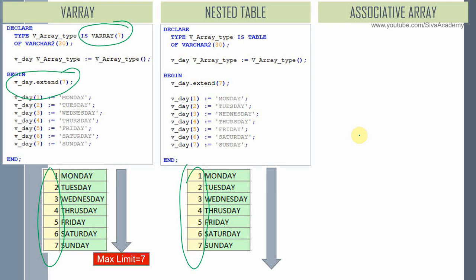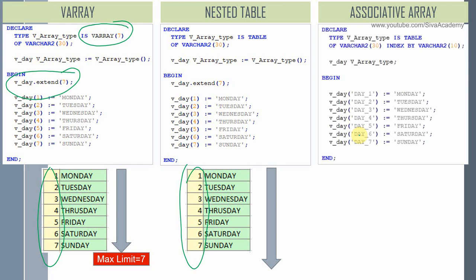Let me reiterate the key concept here. In associative array the index is not a sequential number; instead it's a user defined value. Hence using the index and the value portion we can store associated or related key-value pair information — maybe that's the reason this is called associative array. Here is an example for associative array where I am defining the index portion as varchar data type. Hence against the day one index id I am storing Monday and subsequently all the other days of the week. This is just for introduction; in the subsequent slides we will understand in detail about associative array.